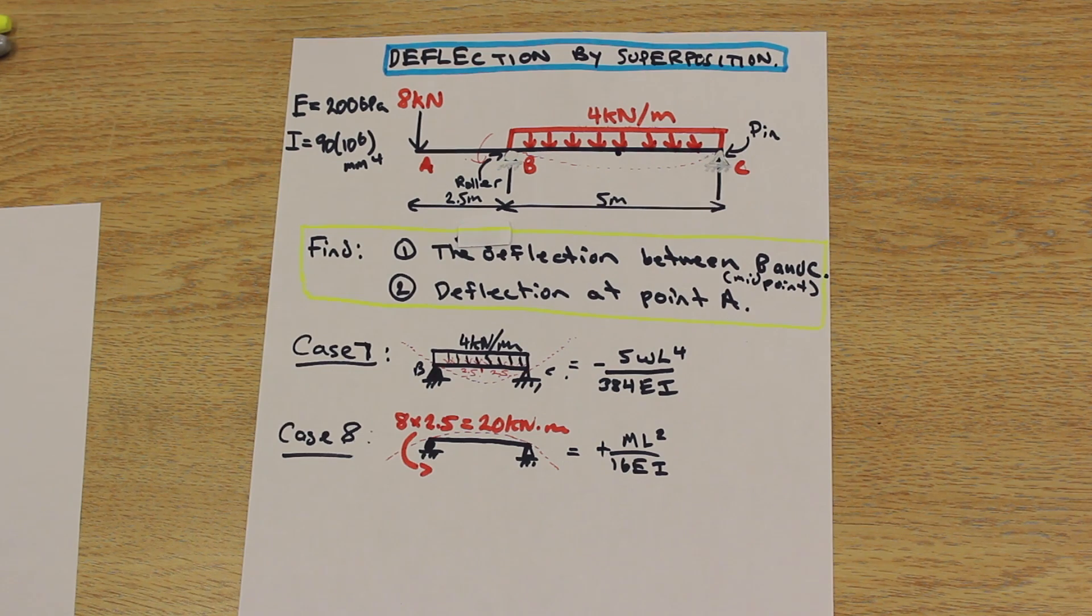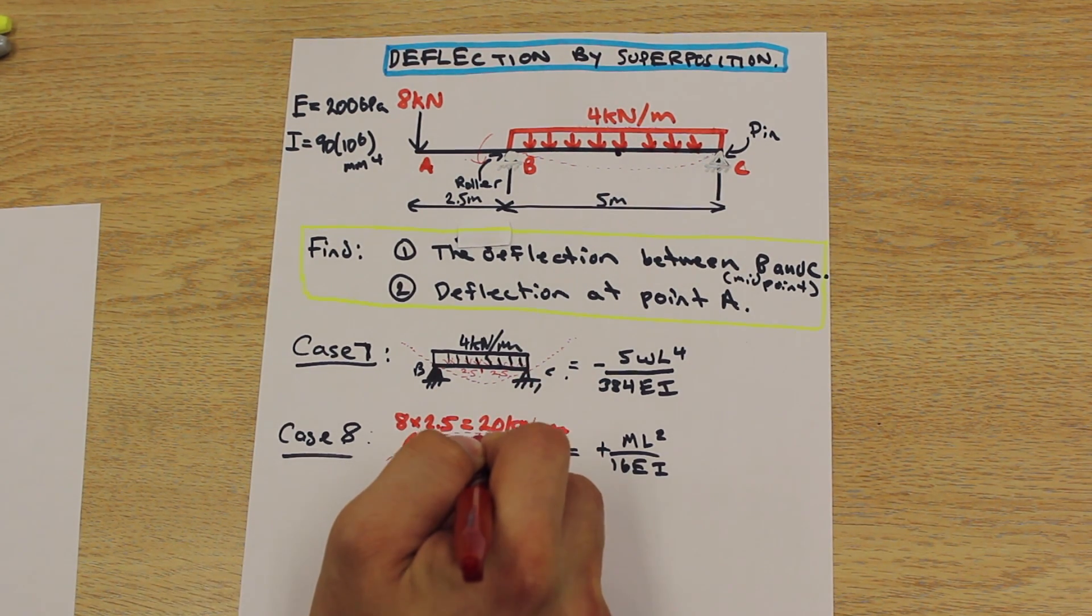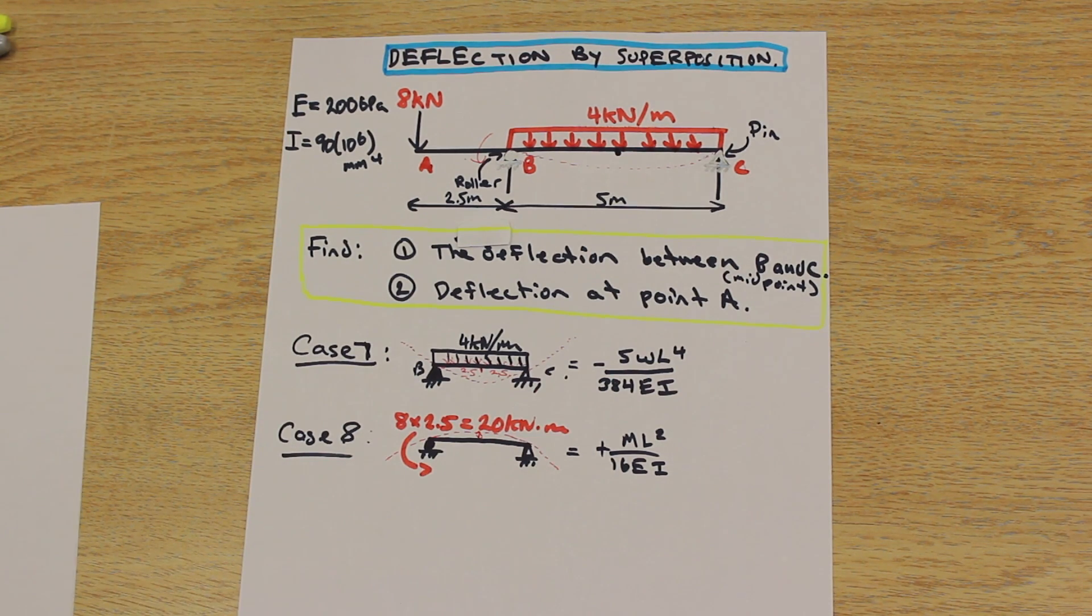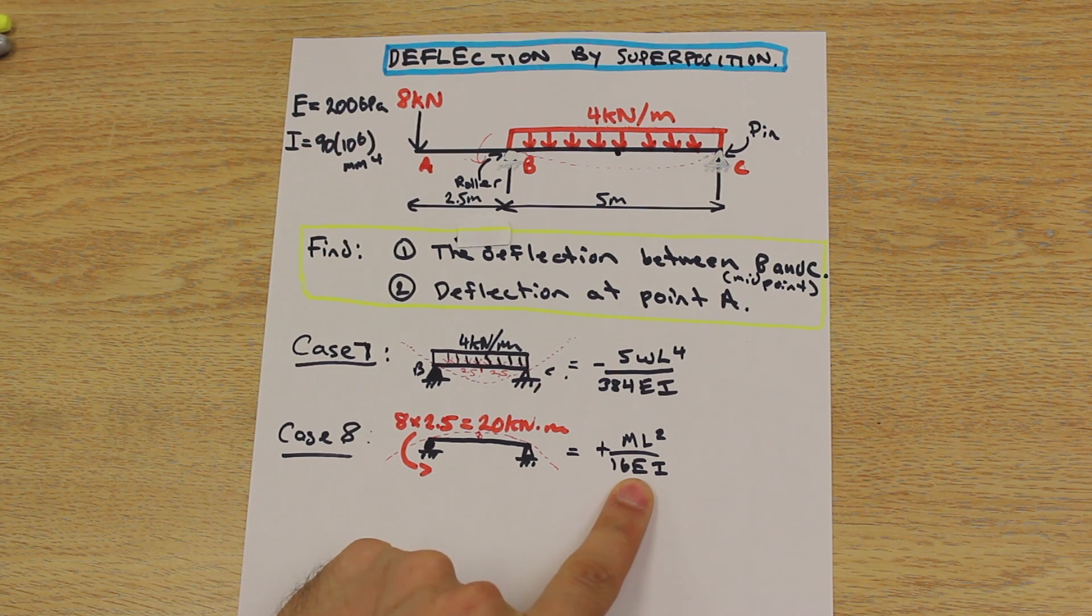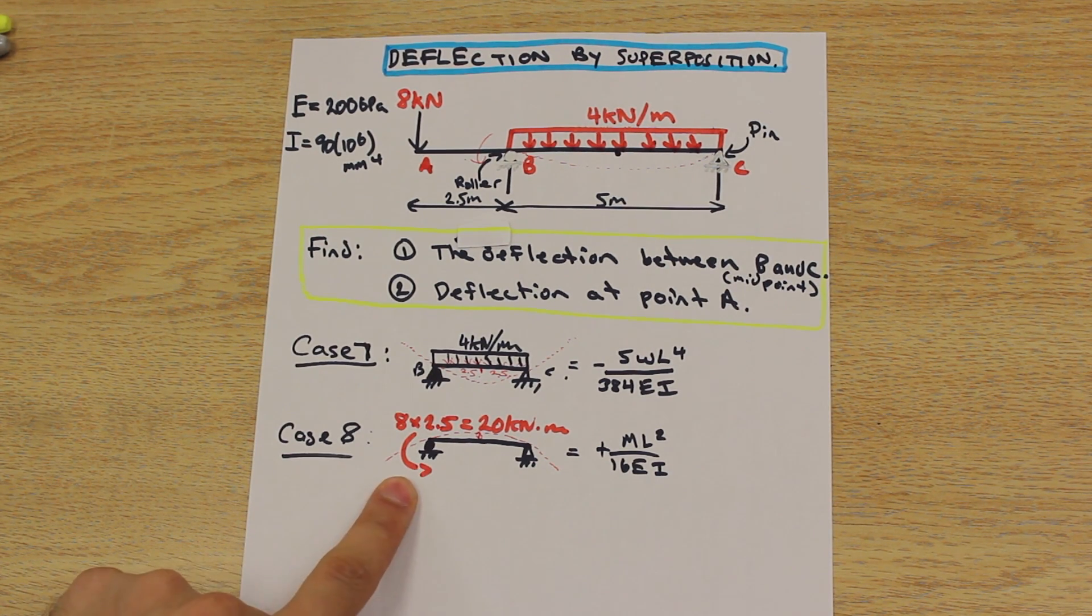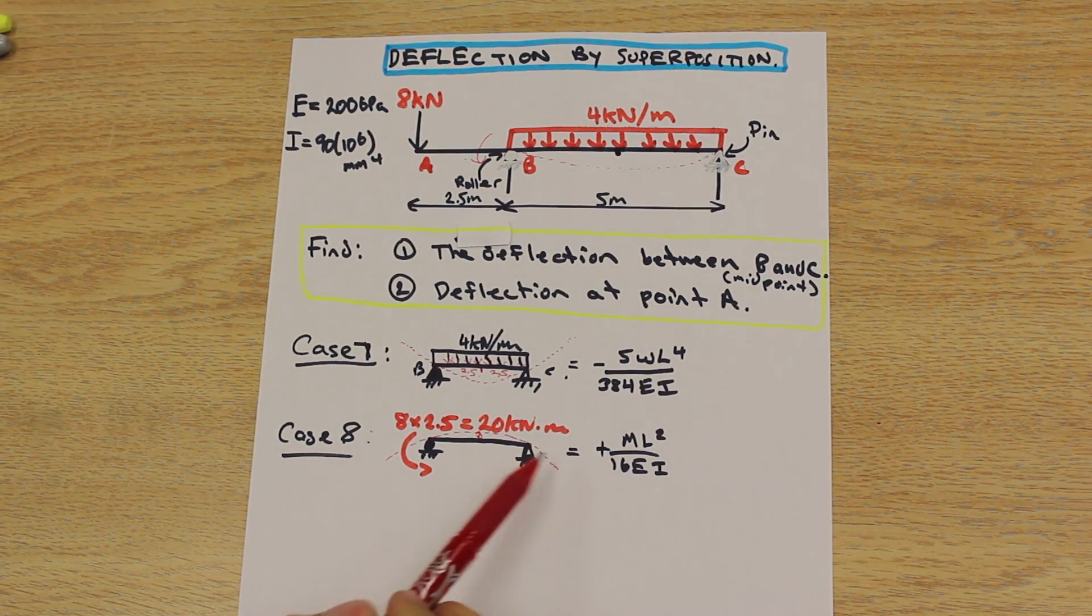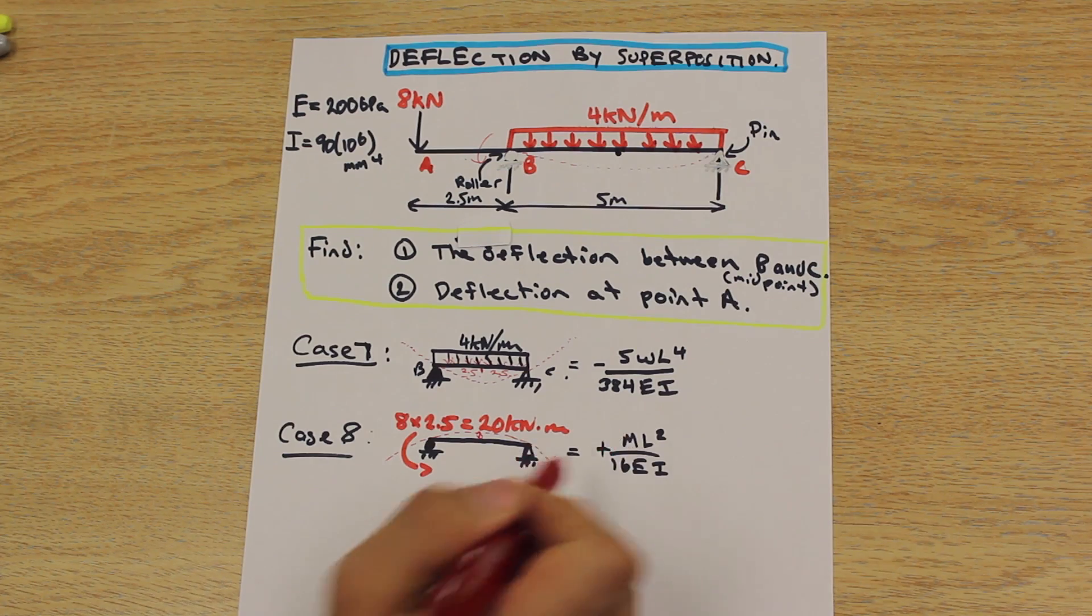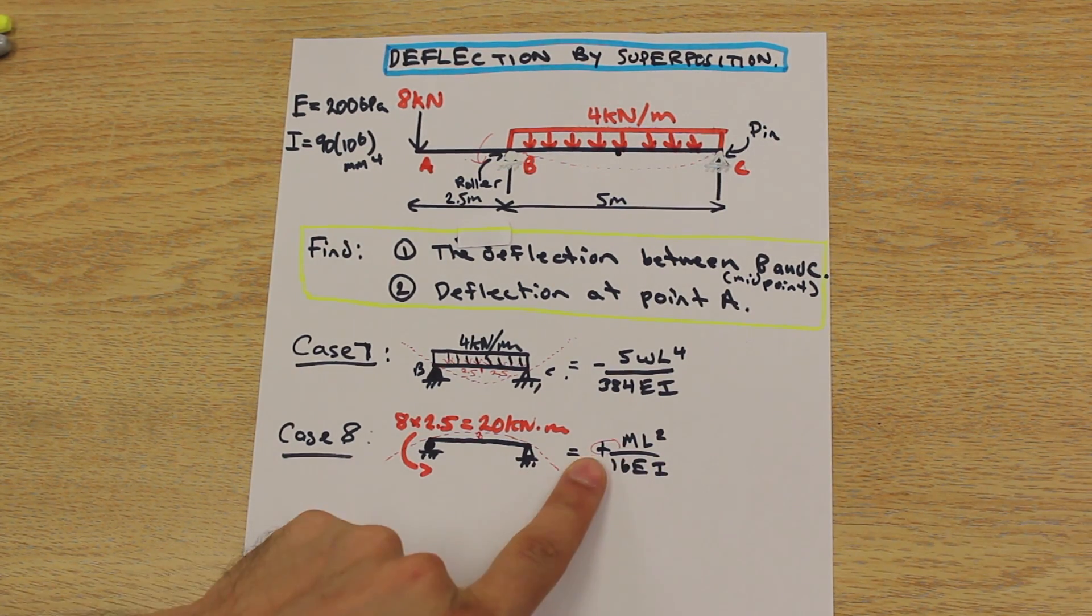So if you need to use your hand maybe to see which way the beam would be deflecting, go ahead, don't be embarrassed. And that's going to cause a positive deflection here. So we're going to go to our table and we're going to take the equation for the middle point of case 8. So in the table, the sign is given as a negative. However, in the table, the moment is going in the other direction.